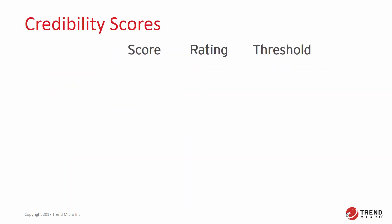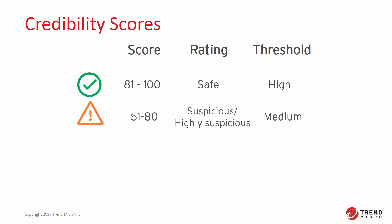The Trend Micro Smart Protection Network or the local smart protection server will return a credibility score as follows. A score between 81 and 100 is considered safe, as there are no known or potential threats associated with this website. In this case, the security level will be set to high, meaning we're only going to allow access to websites with a high credibility. A score of 51 to 80 indicates a possible phishing page or a potential source of malware or spyware.